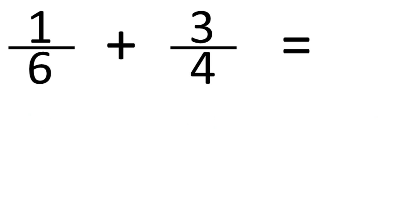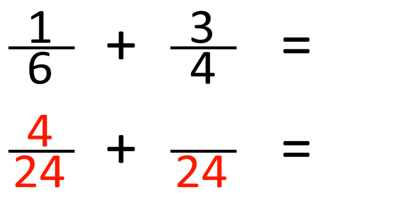Now using the other method, with 24 as the common denominator. I multiplied 6 by 4 to get 24, so I multiply the numerator by 4, which is 4. On this side I multiplied 4 by 6 to get 24, so I multiply the numerator by 6, which gives me 18. 4 plus 18 is 22, so the answer is 22 over 24.